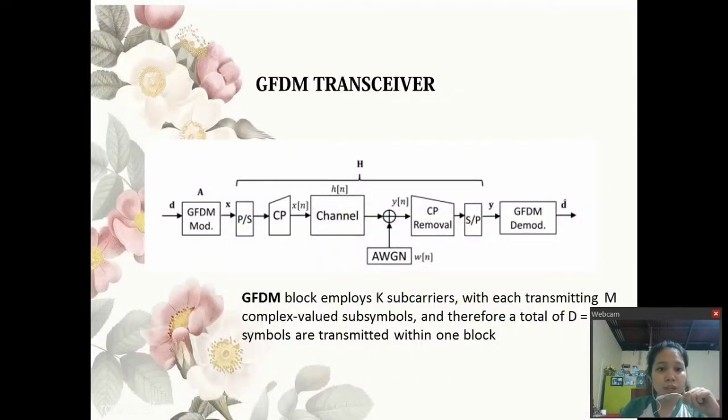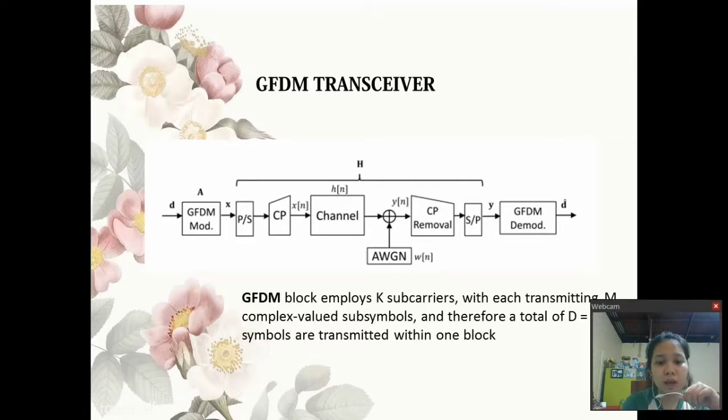In this illustration, this is the GFDM transceiver where it is a block-based multi-carrier communication scheme. Each GFDM block employs K subcarriers with each transmitting M complex valued sub-symbols, and therefore a total of D equals KM symbols that are transmitted within one block.